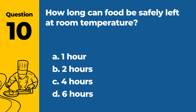Question 10. How long can food be safely left at room temperature? a. 1 hour. b. 2 hours. c. 4 hours. d. 6 hours. Answer: b. 2 hours. Food can be safely left at room temperature for up to 2 hours before it becomes susceptible to bacterial growth.